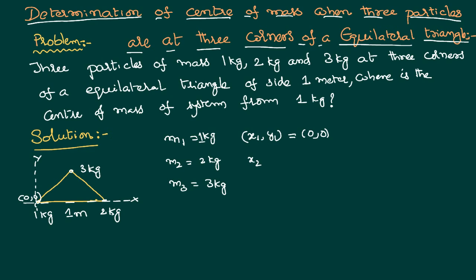Then x2, y2 will be: it is on x axis at a distance 1 m and it is on the x axis itself, therefore y component equal to 0.